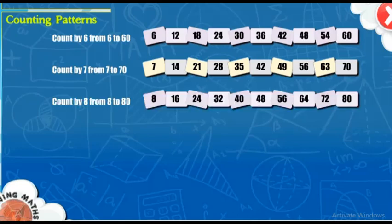70. Count by 8 from 8 to 80. 8, 16, 24, 32, 40, 48, 56, 64, 72, 80.